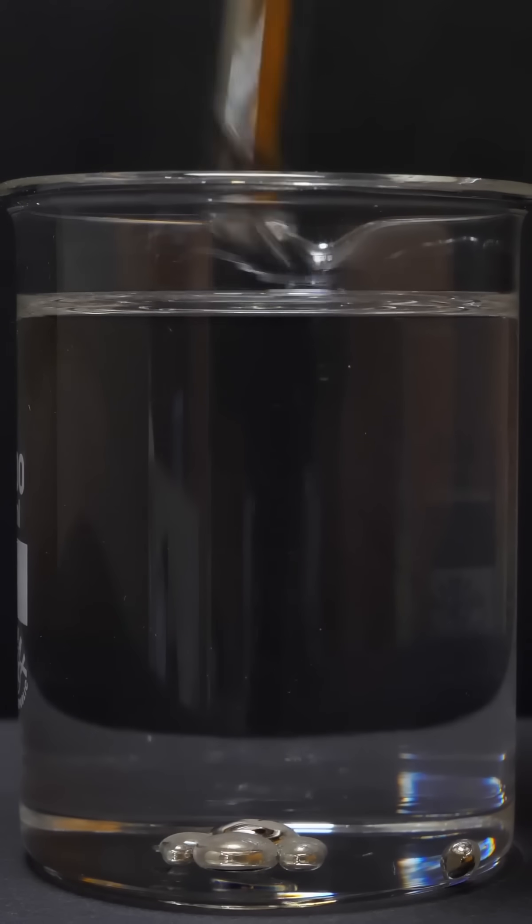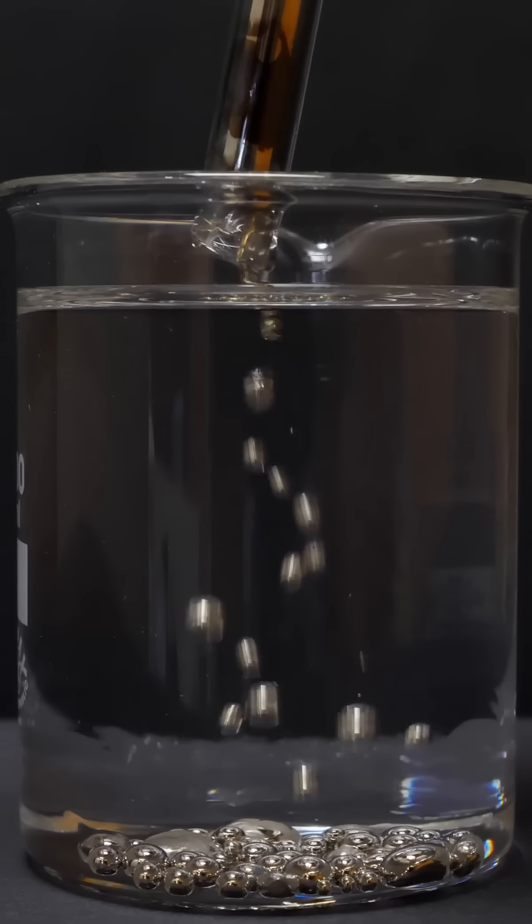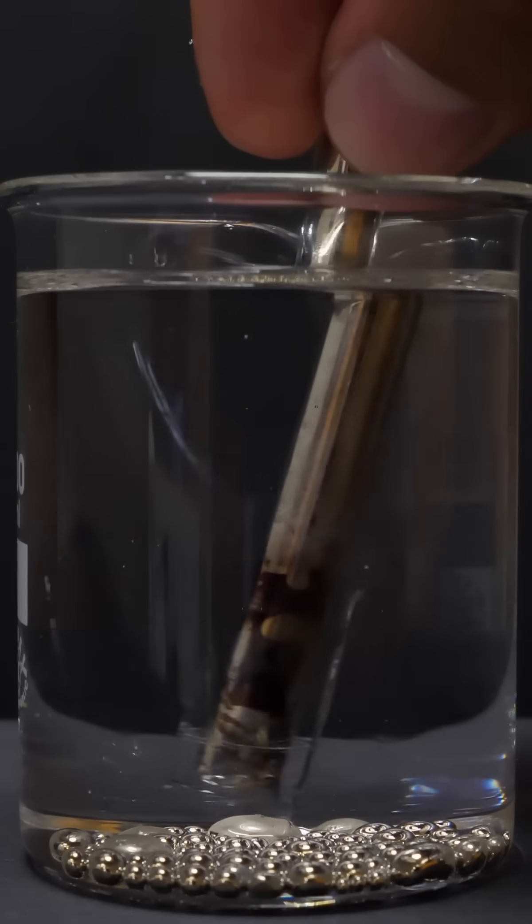Cesium melts at 28 degrees Celsius, so I can easily melt it with my hand. The sight of the cesium beads dropping from the ampoule into the oil is absolutely priceless to witness.